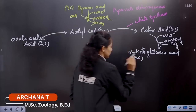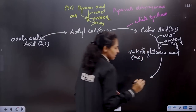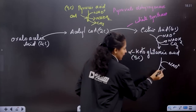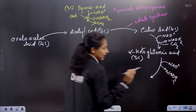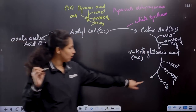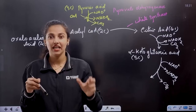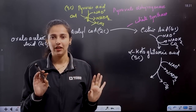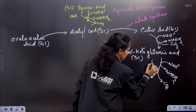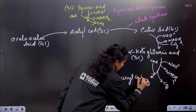From the five-carbon alpha-ketoglutaric acid, we again perform stepwise removal of a hydrogen atom — NAD+ accepts it to form NADH2. A carbon dioxide molecule is also removed, leaving us with succinyl Coenzyme A, a four-carbon compound.